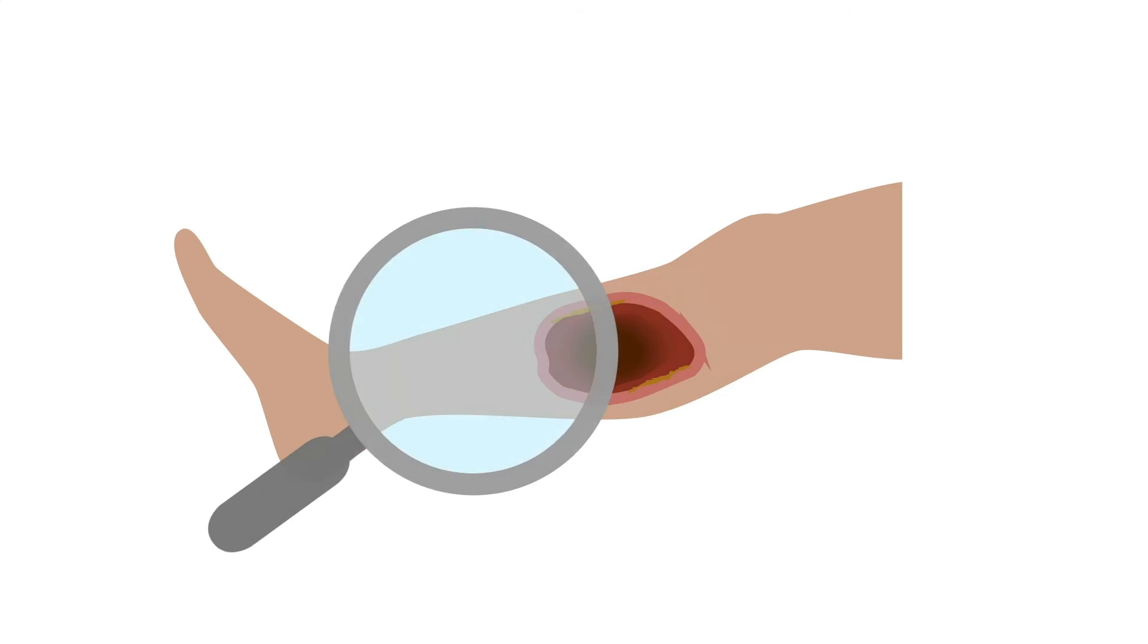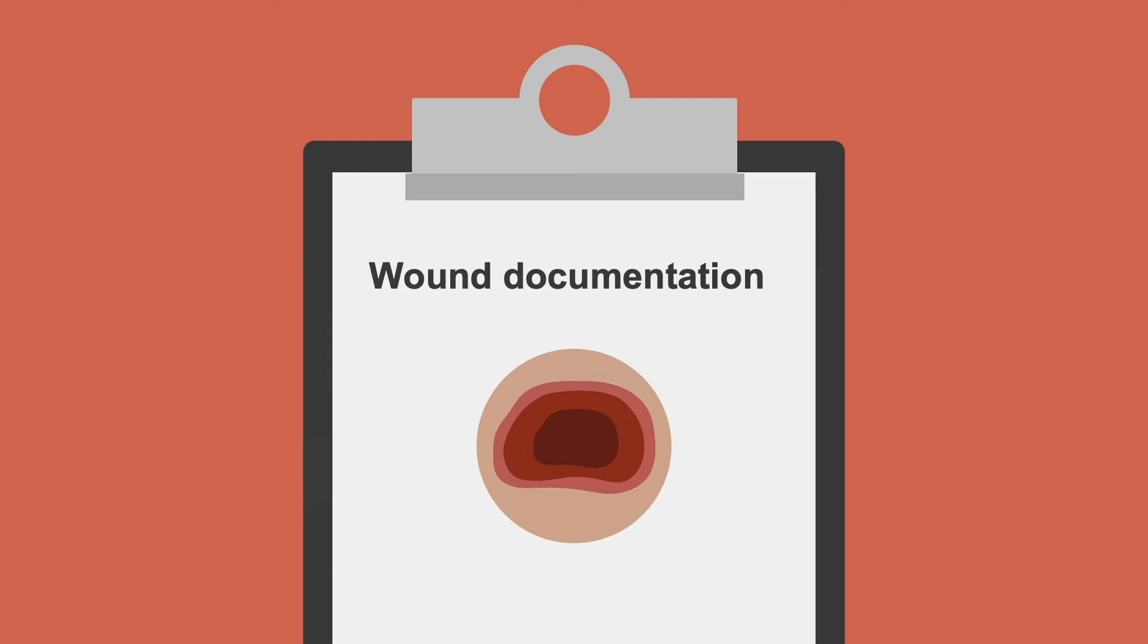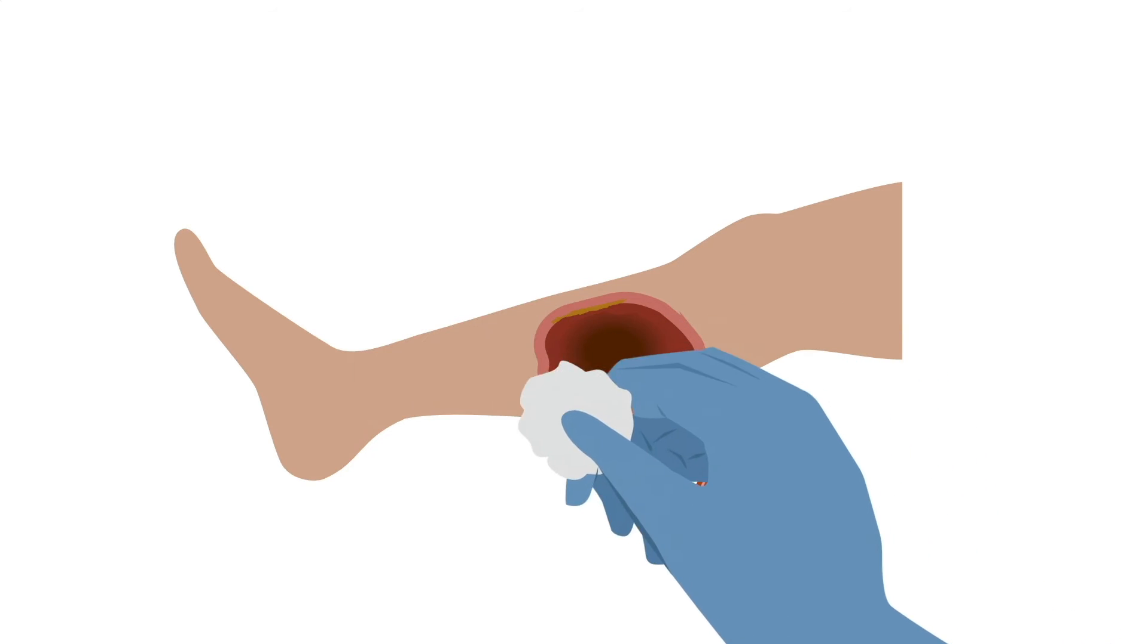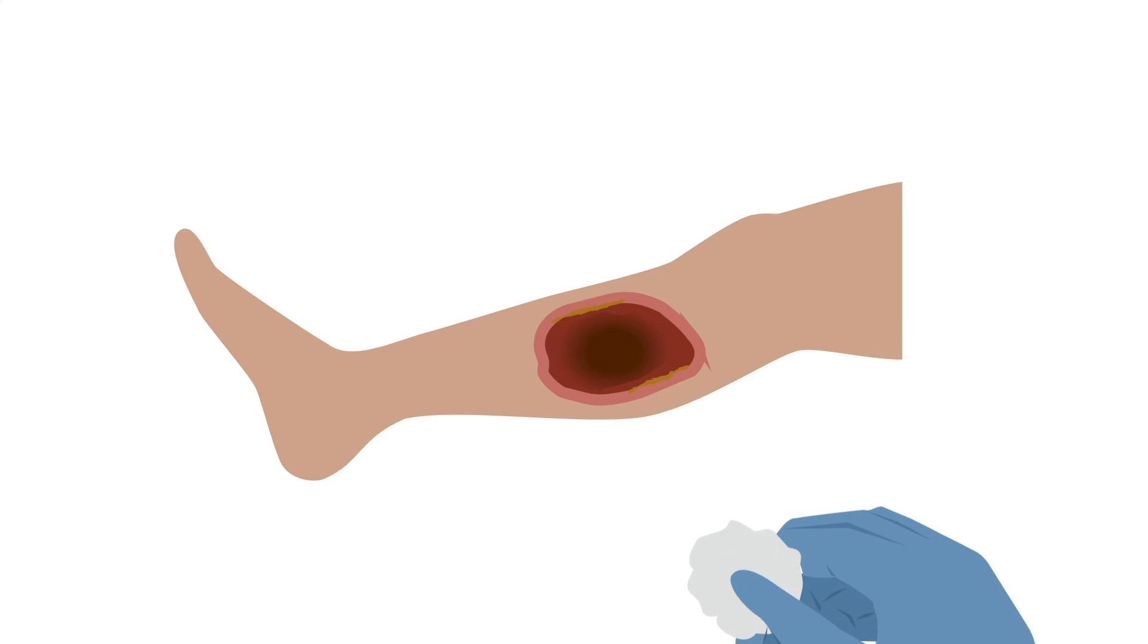First, assess, measure, and document wound characteristics before application. Prepare the wound bed by cleansing and removing any non-viable tissue. Make sure that all bleeding is controlled and stopped. Dry and protect the skin surrounding the wound.